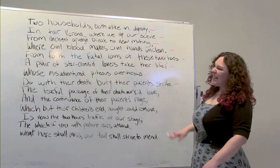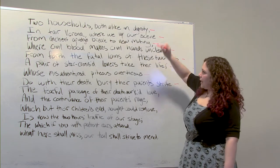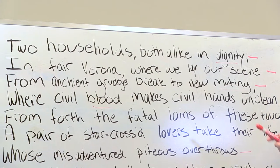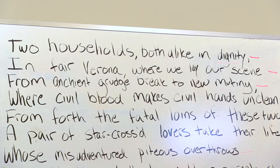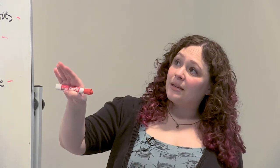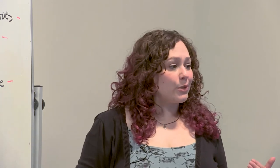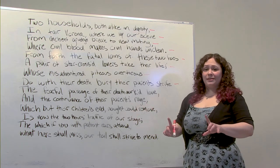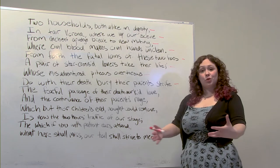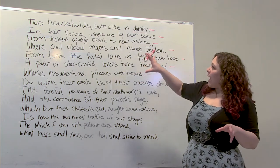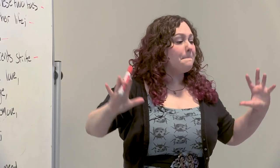Let's break this down even further, line by line. Our very first line: 'Two households, both alike in dignity.' What does that mean? We have two households — two different families. In Shakespeare's time, a household didn't just mean your immediate family. Extended family were counted as part of your household: cousins, second cousins, third cousins five times removed. Your servants were also considered part of your household, as were close family friends. So two households — that's not just small families. These are big, big groups.